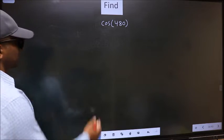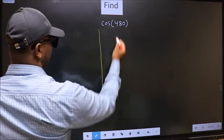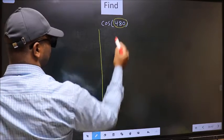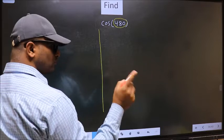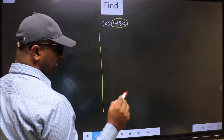See, here we have 480. Now you should check 480 lies between which two multiples of 180.